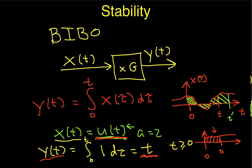In summary, to show that a system is BIBO stable, you need to show that for every possible bounded input the output is bounded. To show that a system is not BIBO stable, you just have to find one bounded input that gives you an unbounded output.